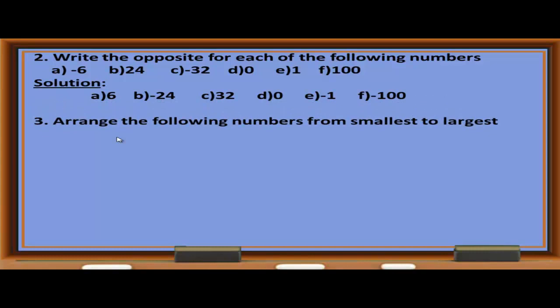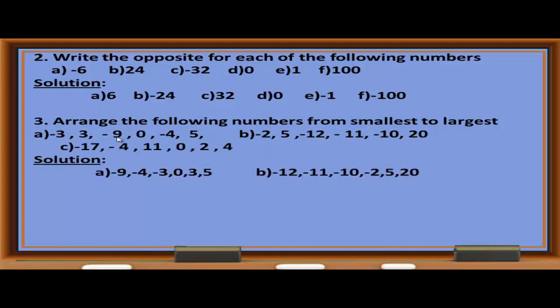Exercise 3: Arrange the following numbers from smallest to largest. A: negative 9, negative 4, negative 3, 0, 3, 5. B: negative 12, negative 11, negative 10, negative 2, 5, 20. C: negative 17, negative 4, 0, 2, 4, 11.